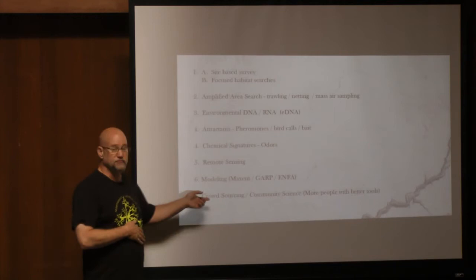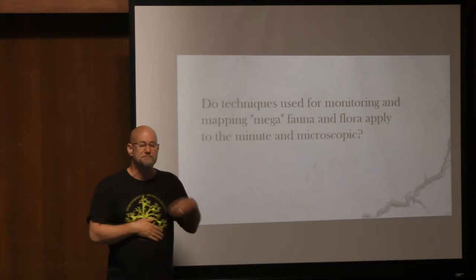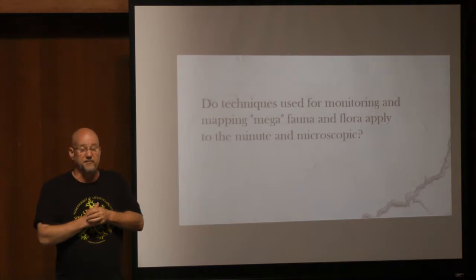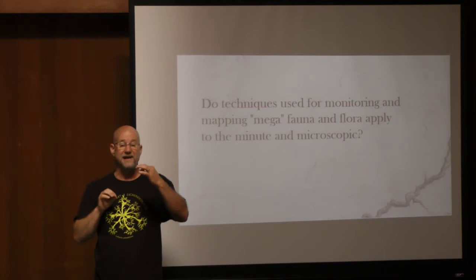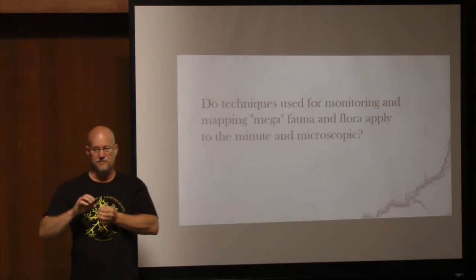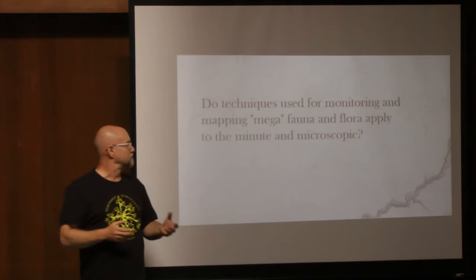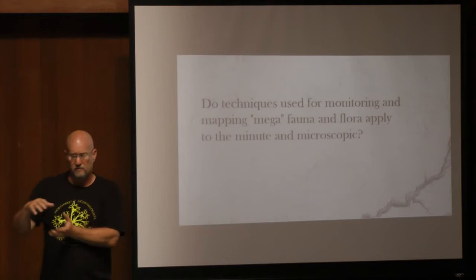This begs another question: do the techniques for monitoring and mapping the megafauna, these bigger things, apply to the minute and even microscopic? In some cases we're unsure. There's a lot of research going on to see if sets of ranges of certain species — things that have very large range sizes and things with smaller and smaller range sizes — follow the same mathematical extrapolation, and how rare are these things that are quite small?